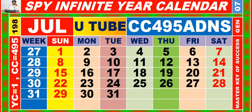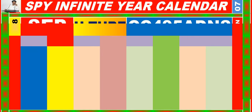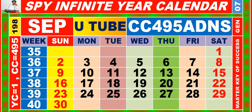Calendar for the month of July, having calendar code equal to 4, 9, 5. Calendar for the month of August, having calendar code equal to 4, 9, 5. Calendar for the month of September, having calendar code equal to 4, 9, 5.